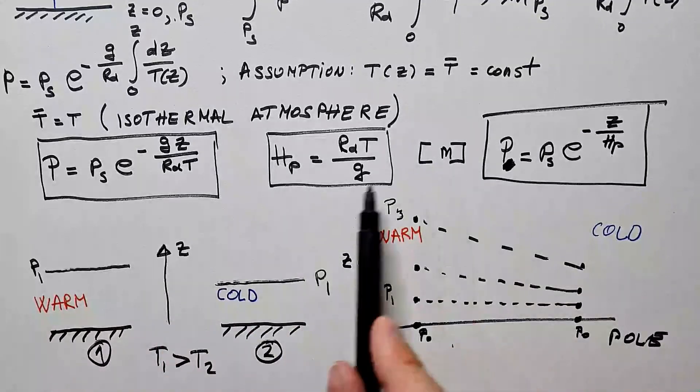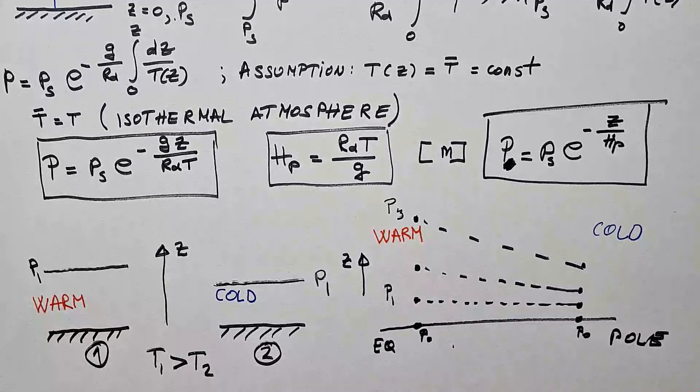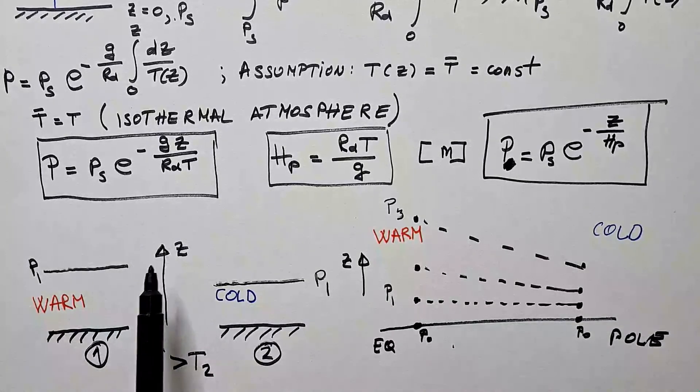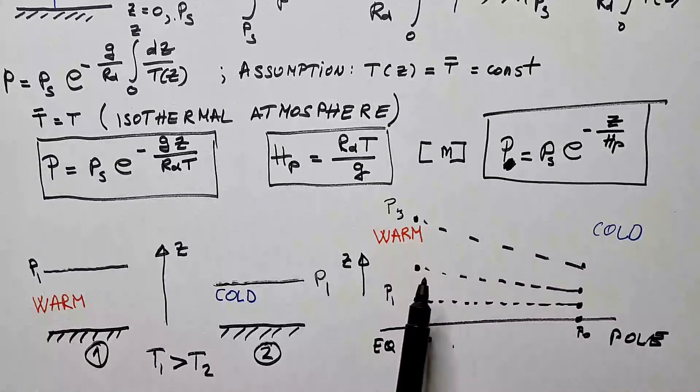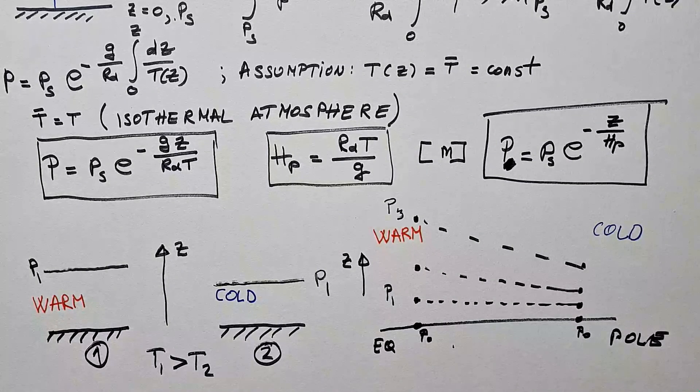And that's thanks to this reasoning that I explained previously here. So, this is the argument that you can use to demonstrate that pressure in cold air decreases faster with the altitude than the pressure in warm air. And this is, indeed, how the pressure surfaces look like between equator and the north pole or south pole.